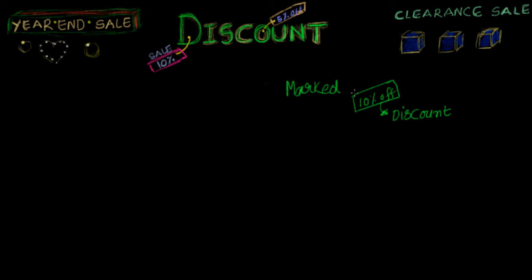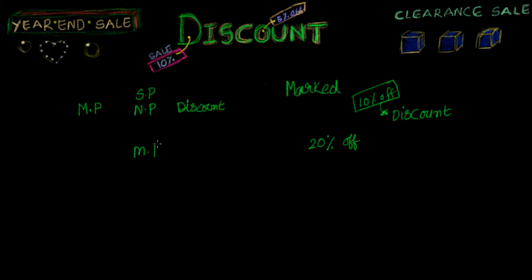Let's have a look at a 20% off discount scenario and how we represent this. As we said earlier, there is market price and there is discount. The difference is the price at which the customer is buying the product. So, three important players in this whole area of discount: market price, net price or sale price, and discount. Discount is nothing but the difference of market price minus net price.